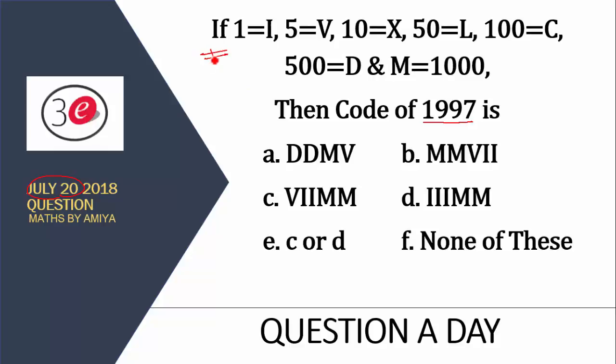This is a coding system with one of the conditions applicable which we use generally in our life. The question is, these are nothing but the code of the numerical system. So what would be the code of 1997?